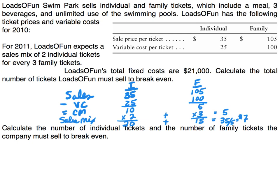To calculate break-even, very similar to what we did before, we take our fixed costs of $21,000 and divide by the weighted average contribution margin of $7 per ticket. That gives us 3,000 tickets to break even.